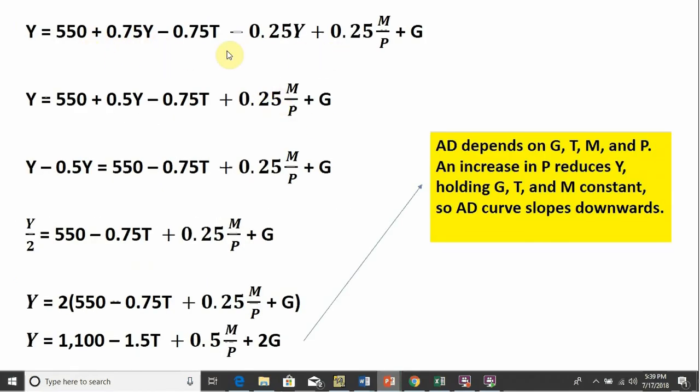So carrying this over to the next screen, we got plus 0.75Y minus 0.25Y. That's where this 0.5Y is coming from. Nothing else changes. Subtracting 0.5Y from both sides, so moving this 0.5Y to the left-hand side, we have Y minus 0.5Y, which equals 0.5Y or one-half Y.